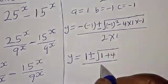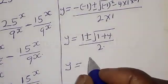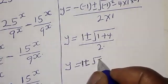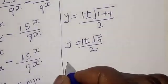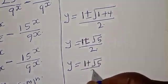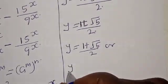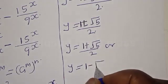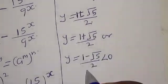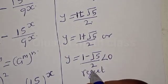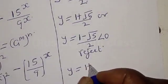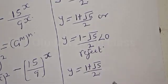Then we have y is equal to 1 plus or minus square root of 1 plus 4, over 2, which gives square root of 5. So y is equal to (1 plus square root of 5) divided by 2, or y is equal to (1 minus square root of 5) divided by 2. The second solution is less than zero, and since y must be greater than zero, we reject this solution.